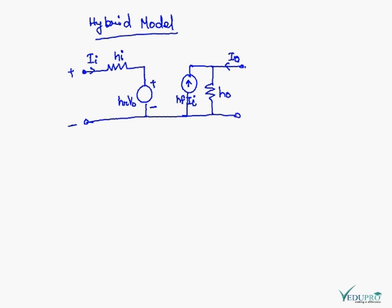The circuit shown is the hybrid model of BJT. All the h-parameters are shown here.